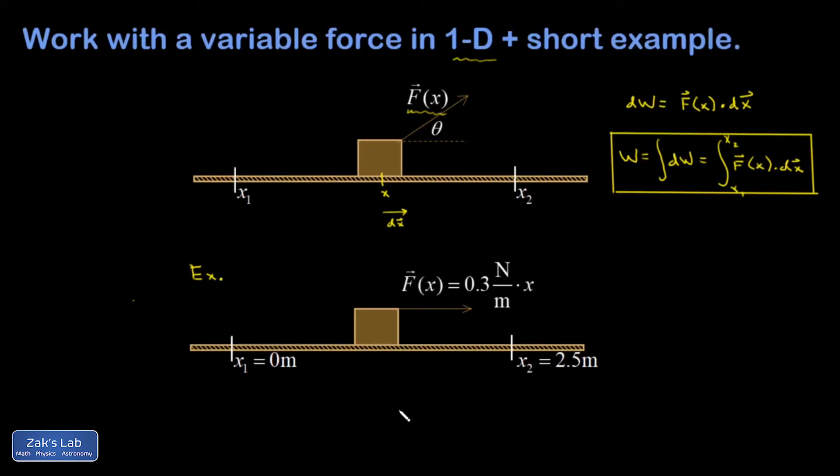So here's a quick example of how we apply this new formula. I have a variable force; this time it's varying in magnitude because there's an x in the expression for force. That means the bigger x gets, the bigger the force gets. Notice the units on the coefficient here are newtons per meter. The meters cancel and I'm left with newtons. My initial position is zero, my final position is 2.5 meters.